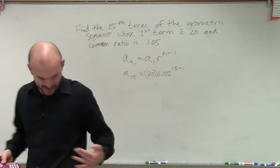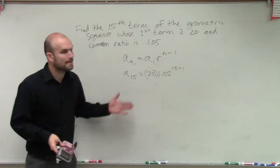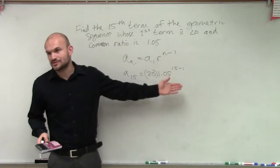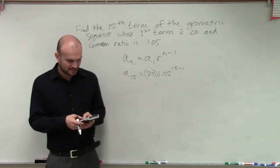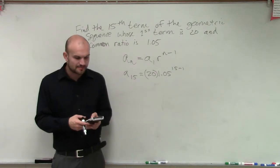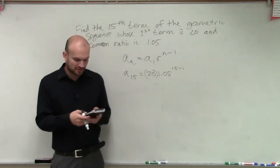We didn't do compound interest in this class, but just make sure you guys do order of operations. 15 minus 1 obviously is 14. Do 1.05 raised to the 14th power first, then multiply it by 20.